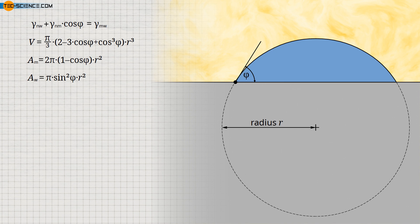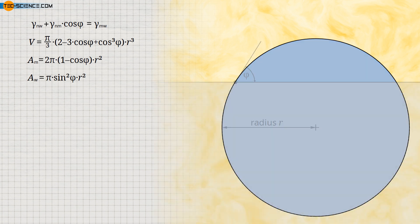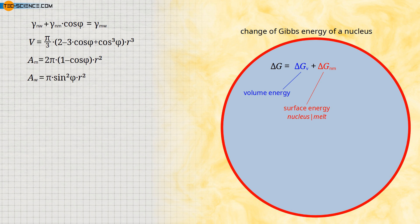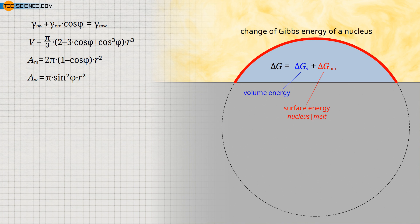Before discussing heterogeneous nucleation further, we briefly revisit homogeneous nucleation — a nucleus forming in the melt — where the change in Gibbs energy was traced back to two terms. The first term corresponds to the decrease in volume energy due to phase transition, referring only to the nucleus volume. The second term corresponds to the required surface energy between the nucleus and the melt. In principle, this also applies to heterogeneous nucleation; however, one must account for a surface towards the wall as well, which is captured by a third term.